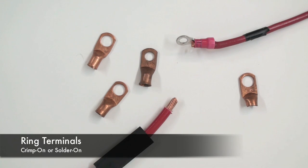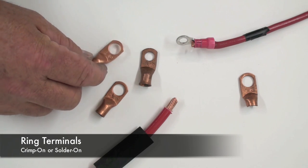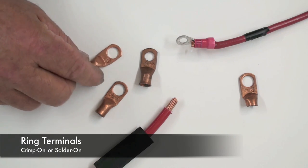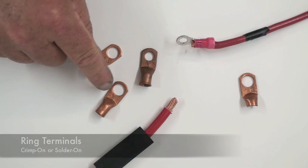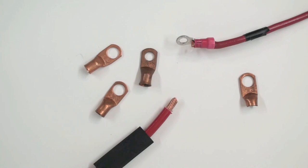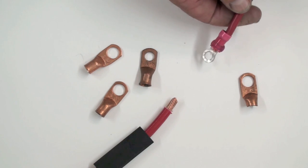These are also ring terminals and they are typically brass or copper and have different sized diameters for mounting to studs or bolts. You can see the gauge is imprinted on top. This is a 4 gauge which goes with a 4 gauge wire. This is an 8 gauge and I crimped this one on.